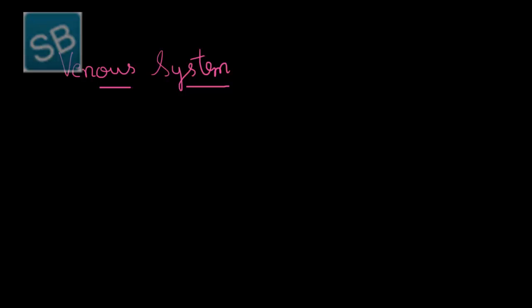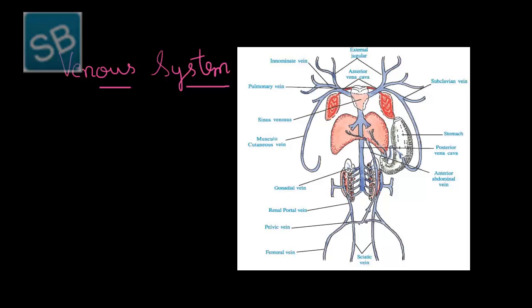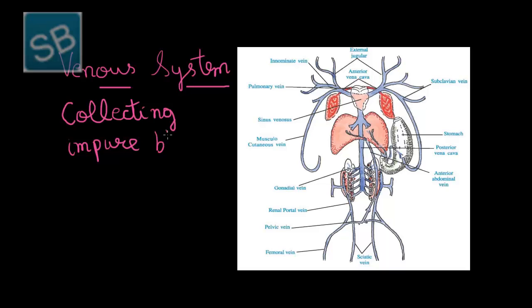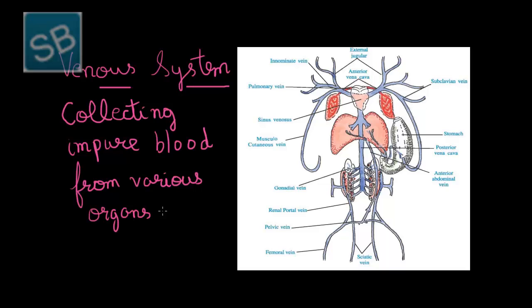Till now we have studied about the arterial system which supplies blood from heart to different parts of the body. Now we start with the venous system — the system that brings blood from different parts of the body to the heart. This blood is in an impure form. This figure describes the venous system of the frog, which is associated with collecting impure blood from various organs and bringing it to the heart.